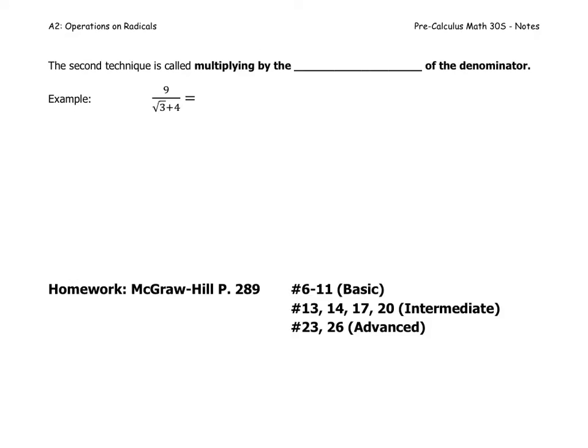The second technique for multiplying here so that you end up without a radical in the denominator is called multiplying by the conjugate, the conjugate of the denominator.